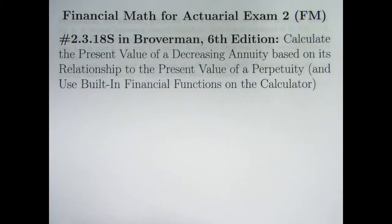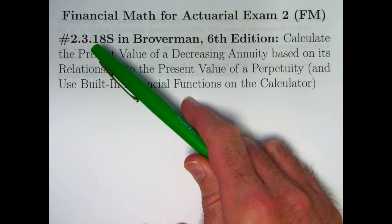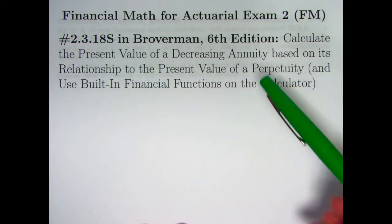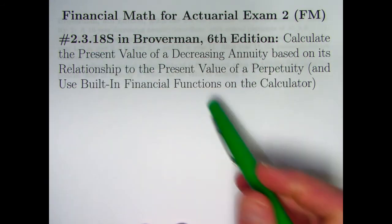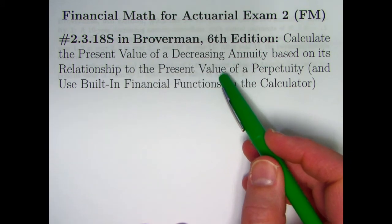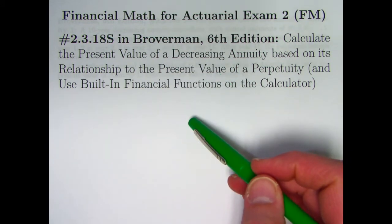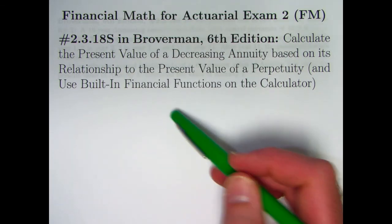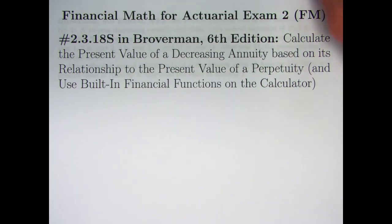Hello. In this video we're going to solve problem 2.3.18s, an old exam problem. We're going to be calculating the present value of a decreasing annuity based on its relationship to the present value of a certain perpetuity. And as in the last video we will get practice using the built-in financial functions on the calculator.